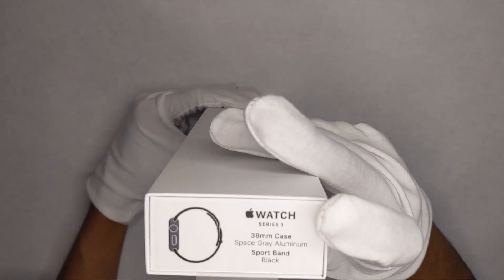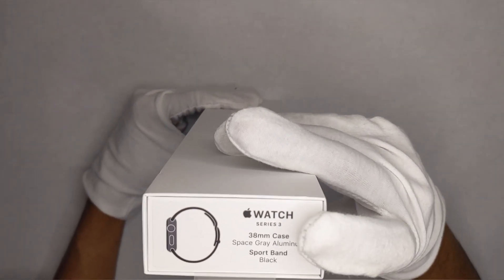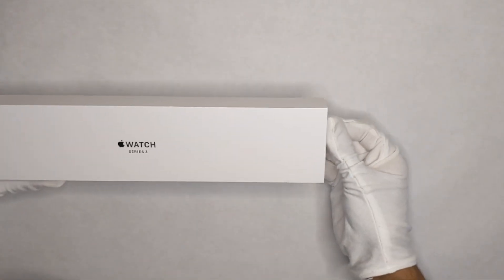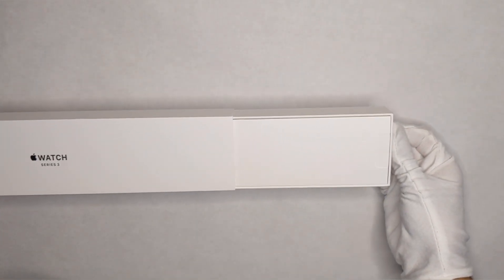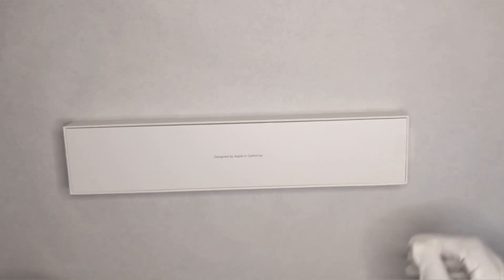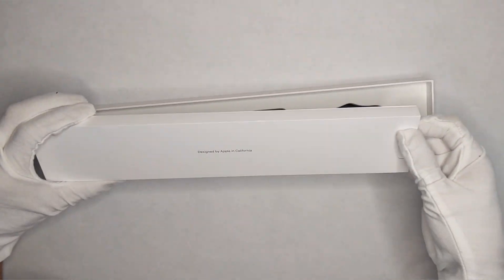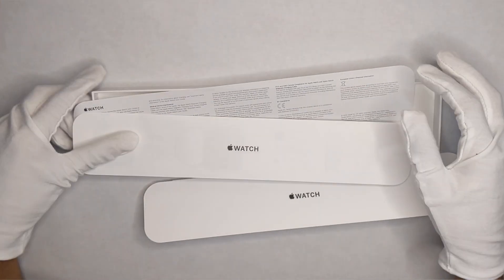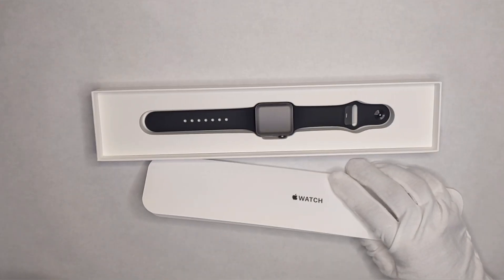As you can see right here, this is the Apple Watch Series 3, 38 millimeter, Space Gray aluminum, sport band black. Let's get into it. Now that was satisfying. Designed by California, typical Apple products, and then my Apple Watch instruction manual and regulatory information.